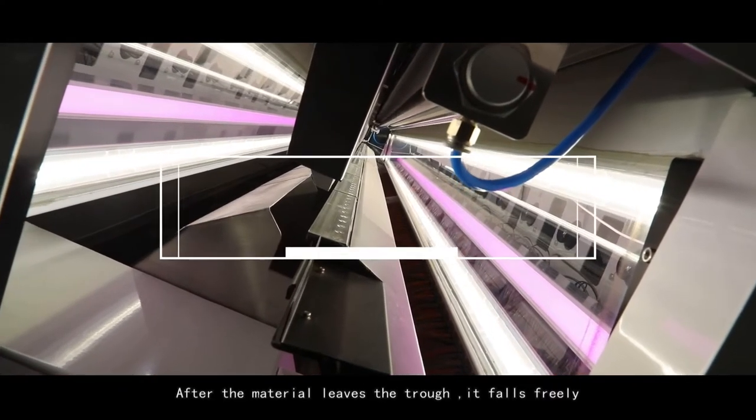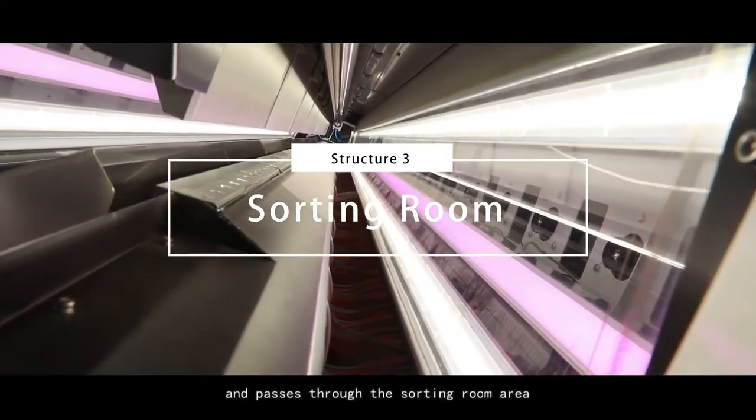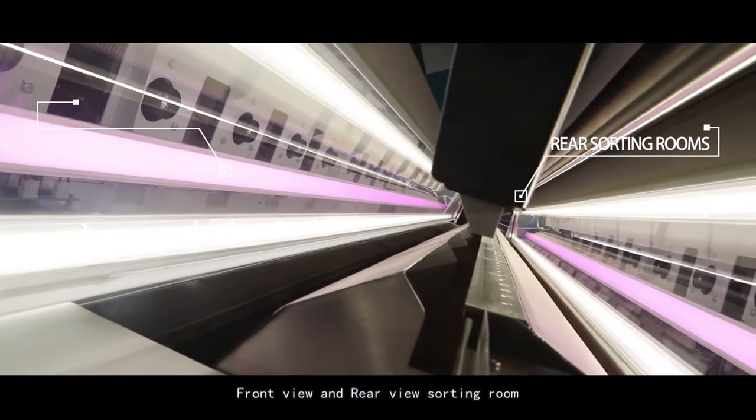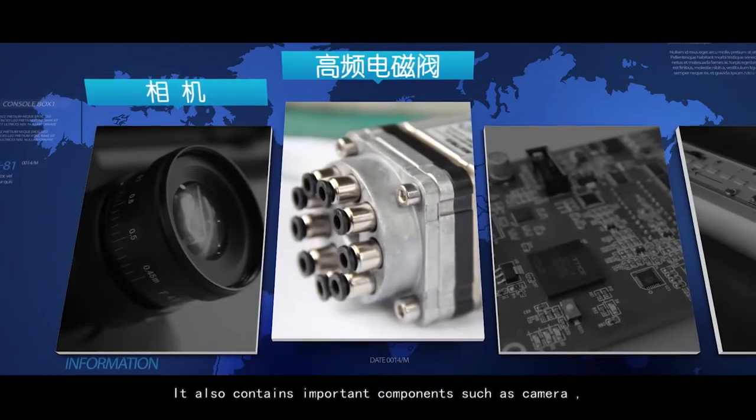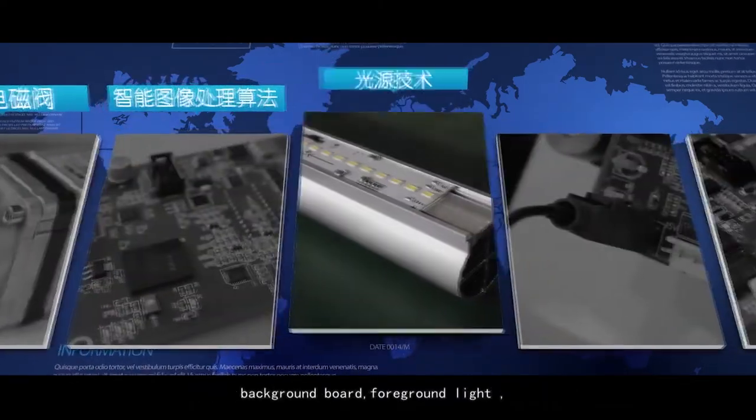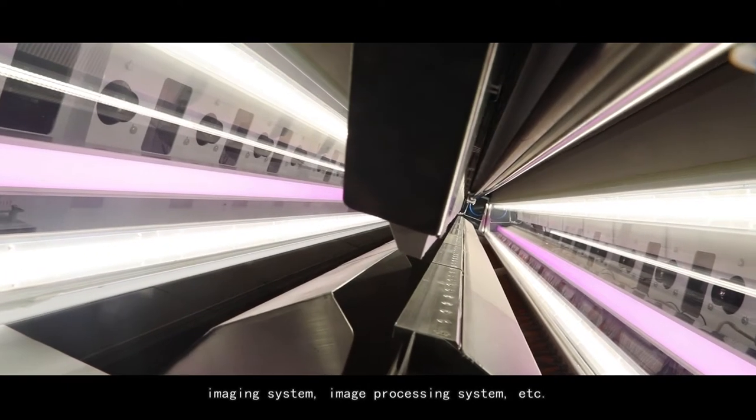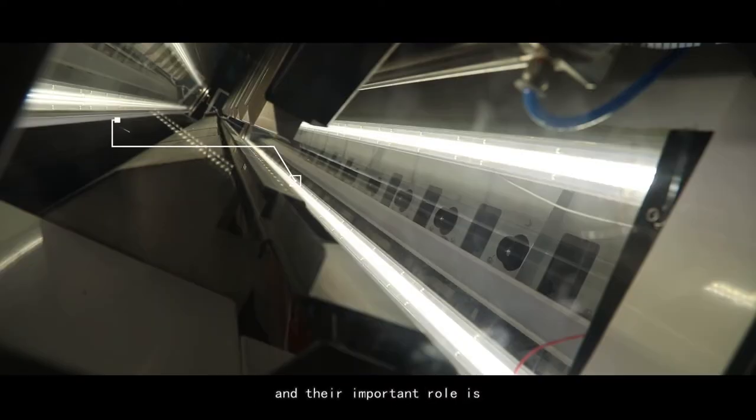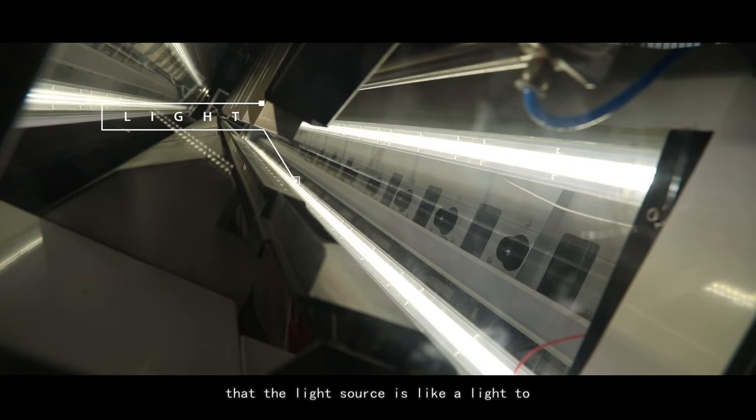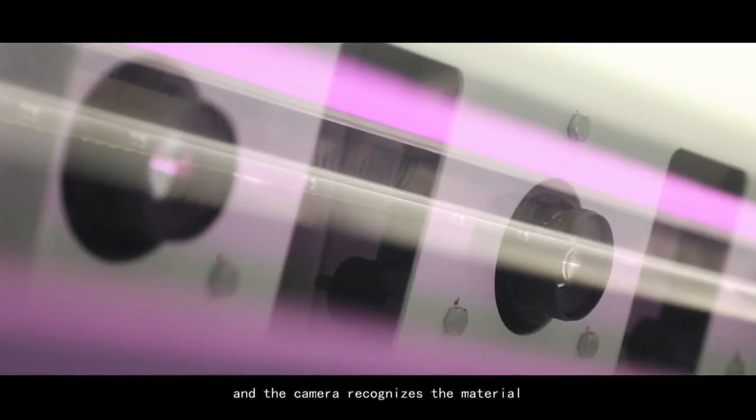Sorting room. After the material leaves the trough, it falls freely and passes through the sorting room area. It is composed of two parts: front view and rear view sorting room. It also contains important components such as camera, background board, foreground light, imaging system, image processing system, etc. The front and rear sorting rooms are a closed and clean environment.